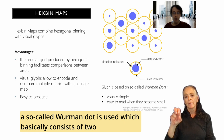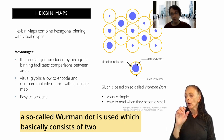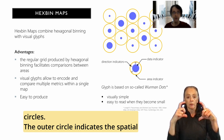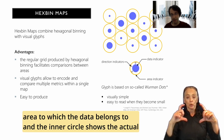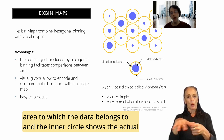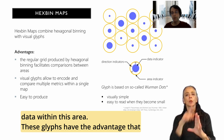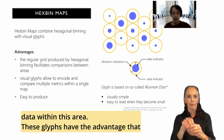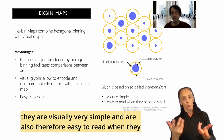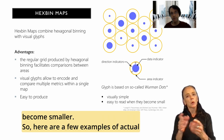Here a so-called vermin dot is used, which basically consists of two circles. The outer circle indicates the spatial area to which the data belongs to, and the inner circle shows the actual data within this area. These glyphs have the advantage that they are visually very simple and are therefore easy to read even when they become smaller.